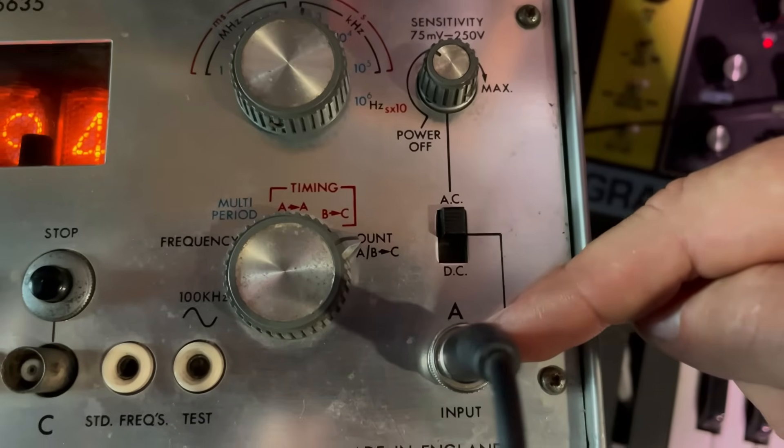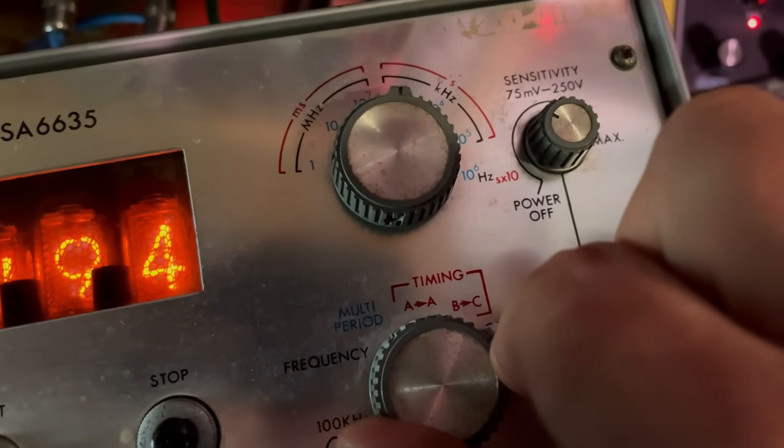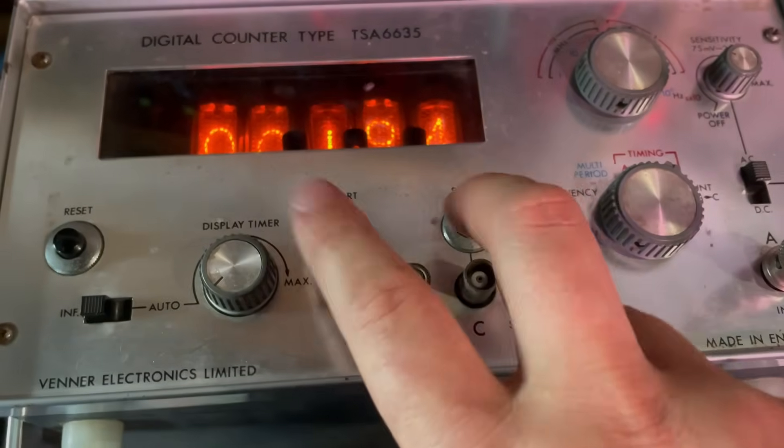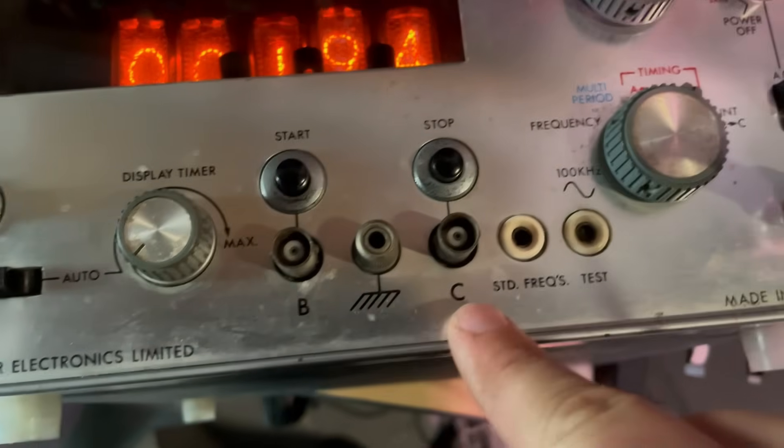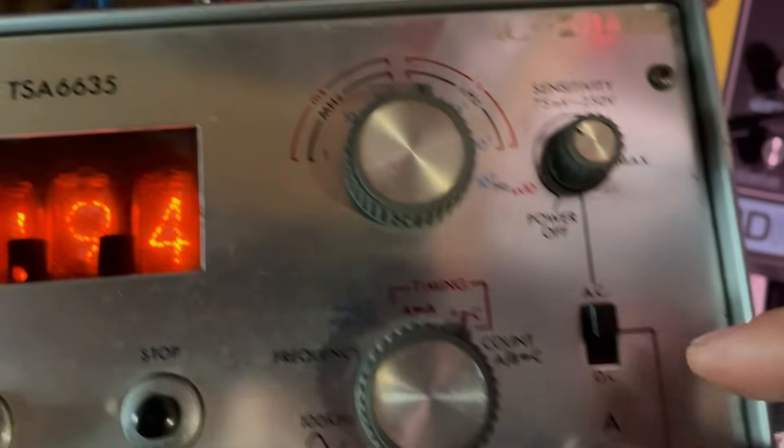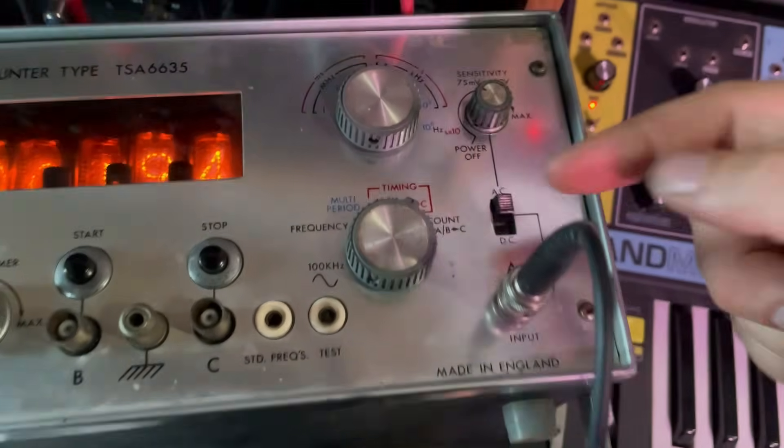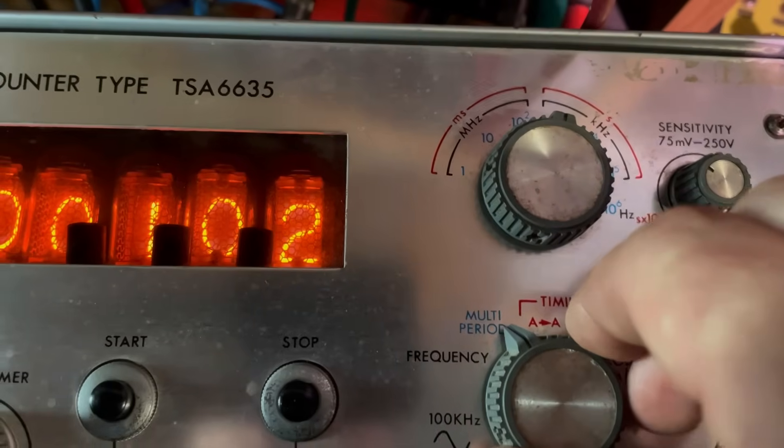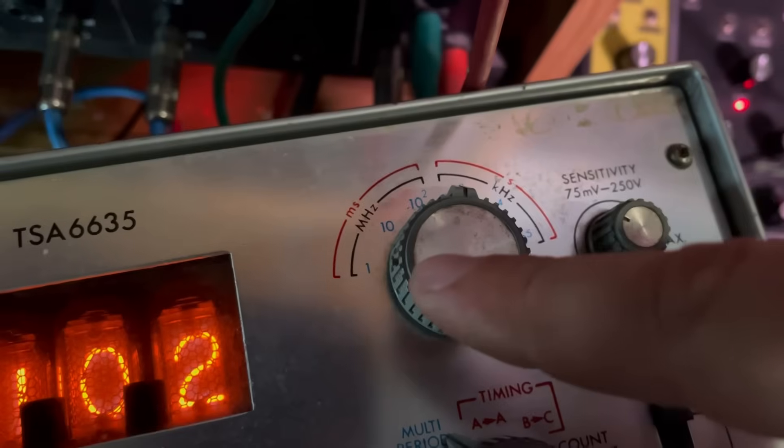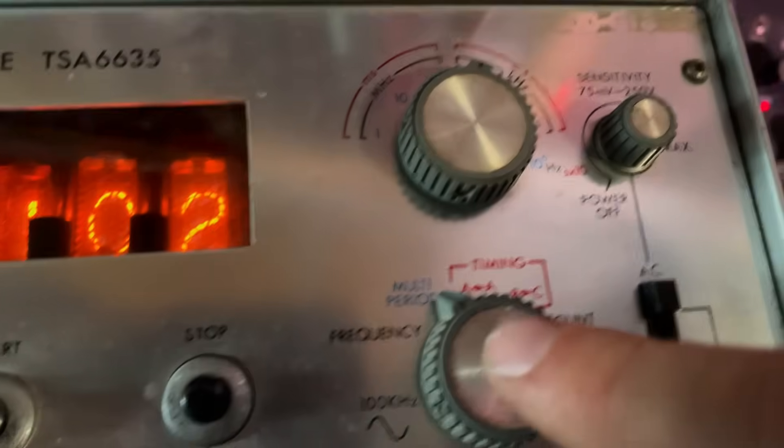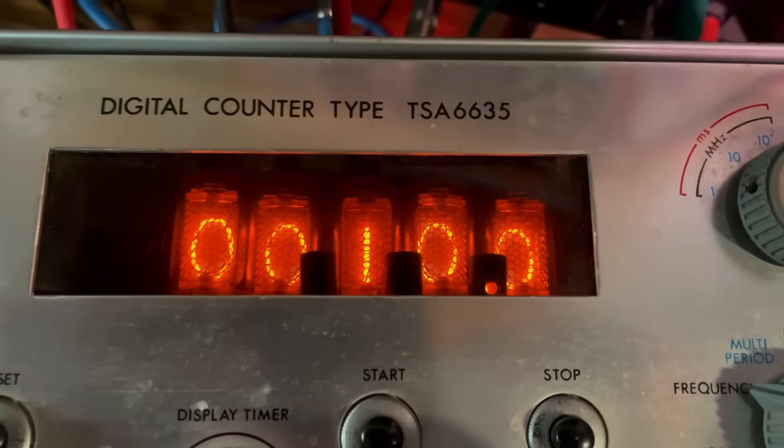Obviously you can trigger that externally via these inputs. We've got different things that we can display with the Nixie tubes here. We're on count at the moment, which is counting the pulses that are coming in the A input. We've also got the timing so we can view the time elapsed between the start and stop. Here this B and C, you can see B and C, and then you've got A to A, the timing in between the pulses coming in here. And then we've also got multi-periods, which I don't really know what it is. You tell me if you know.